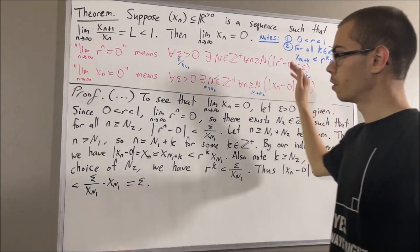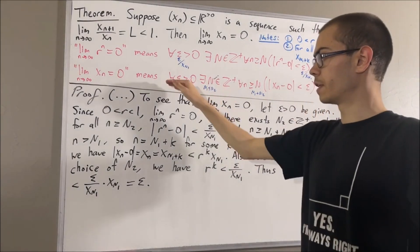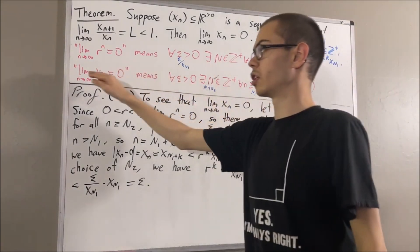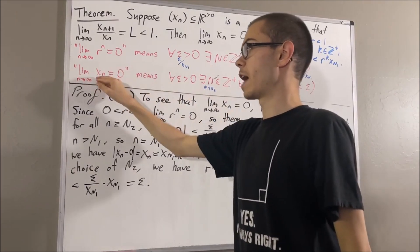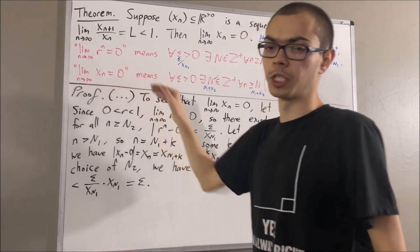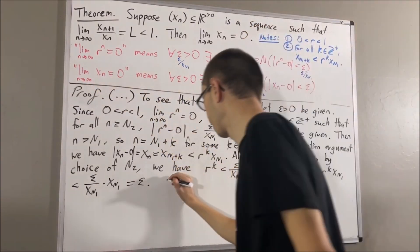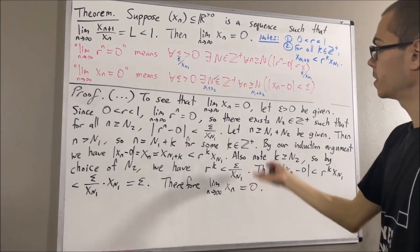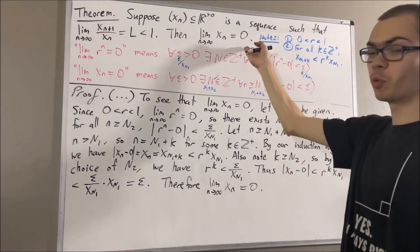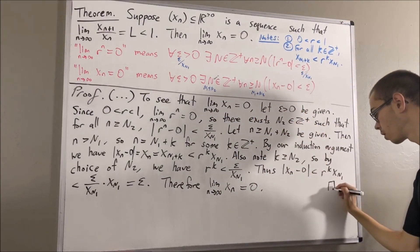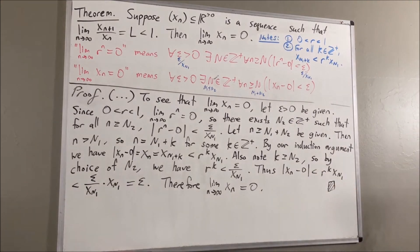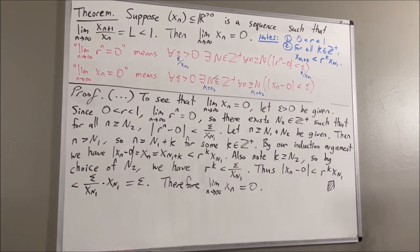We have proven that this statement is true, which means the limit of xn as n approaches infinity is equal to 0. That is exactly what we wanted to prove. So this completes the proof, and that's pretty much it for this video.